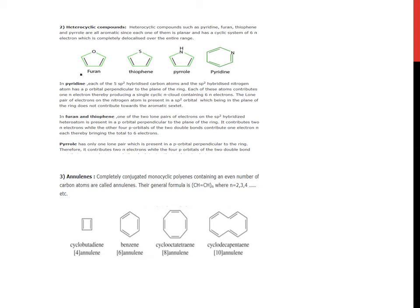Annulenes: completely conjugated monocyclic polyenes containing an even number of carbon atoms are called annulenes. Their general formula is (CH=CH)n, where n is 2, 3, 4, etc. Examples are cyclobutadiene, benzene, cyclooctatetraene, and cyclodecapentaene.